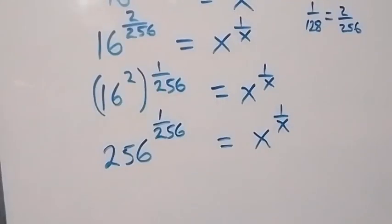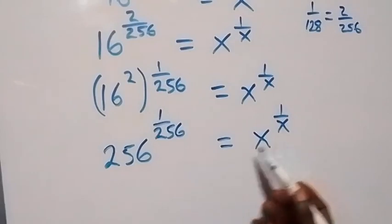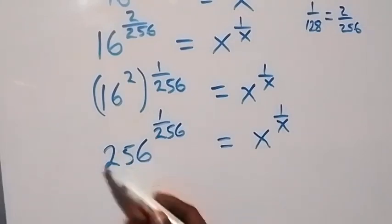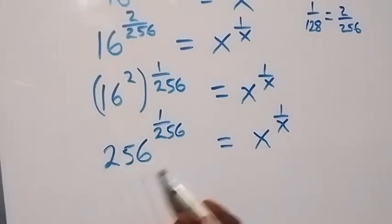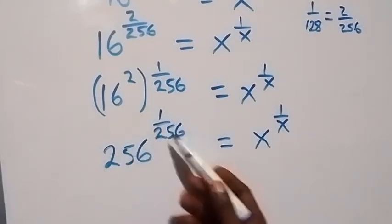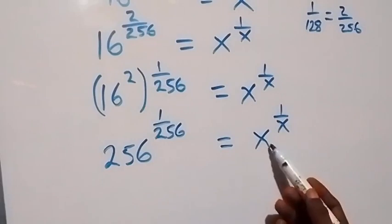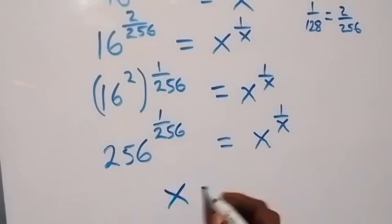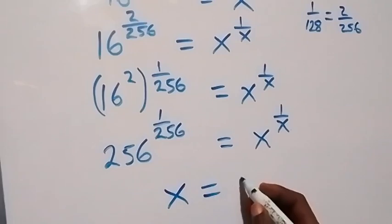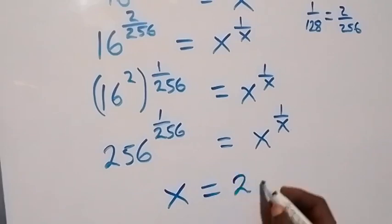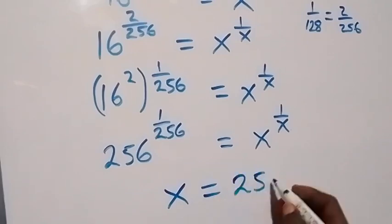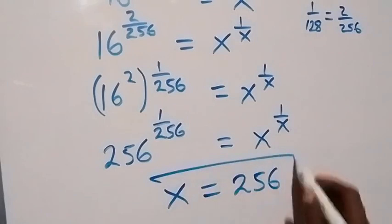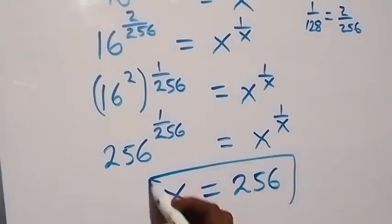From here, we have the same pattern: the number on the left is also the denominator of the exponent, and x is also x on the right side. Therefore, we can conclude that x equals 256. So here we have the solution to this problem.